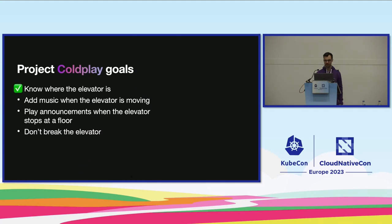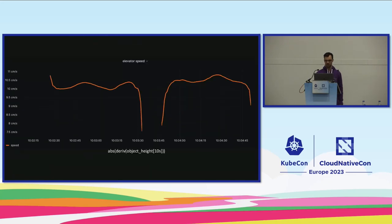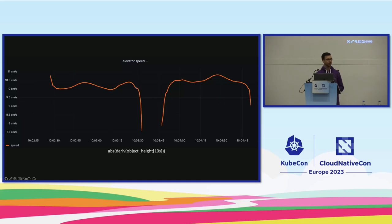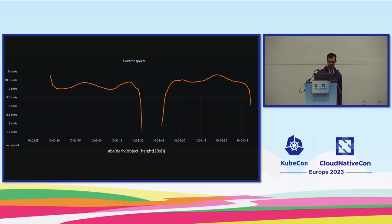I've already reached the vertical goal: I know where the elevator is. Some more charts: the absolute speed from a PromQL query of the elevator height shows it moves about 10 centimeters per second, which correlates with taking 55 seconds to go 550 centimeters. Going up and down are almost exactly the same speed — a tiny bit faster going down, but not noticeable. It doesn't matter if it's empty or full; it's always the same speed.